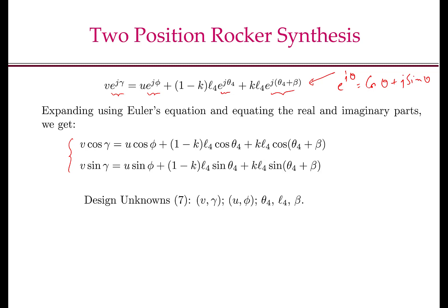Now what we want to do is stare at these equations and identify what are my design unknowns. So V and gamma, which define the position of O2, is an unknown. In general, if I don't make any assumptions, U and phi, which defines the location of the pivot O4, is also a design variable. Theta 4, which defines one extreme position of the follower link or the rocker, is an unknown. The length of the rocker, L4, is unknown. And the variable K, is unknown. There is a typo here. It should not be beta. It should be K. The variable K is unknown. Beta is given to us.